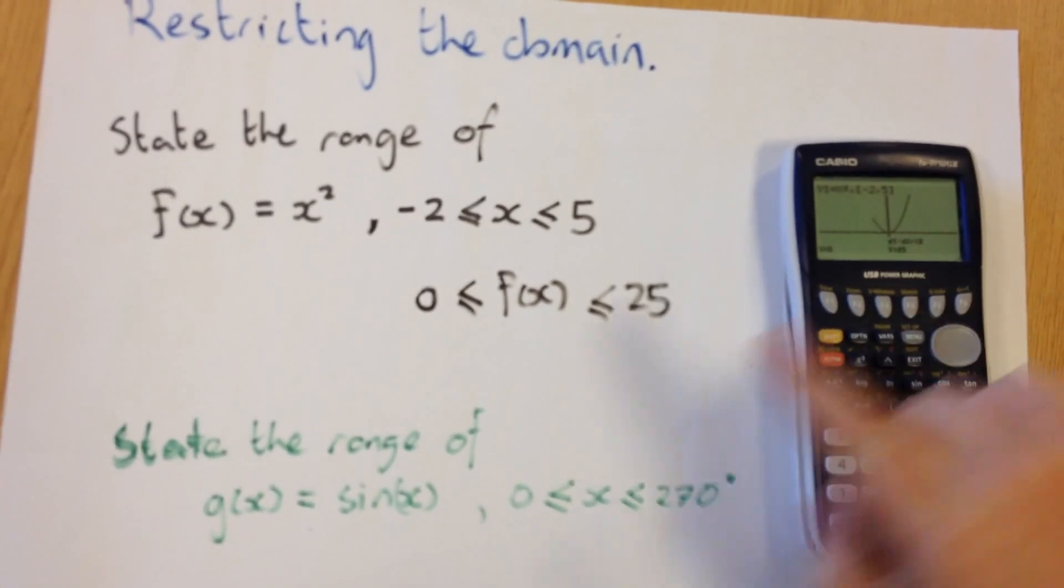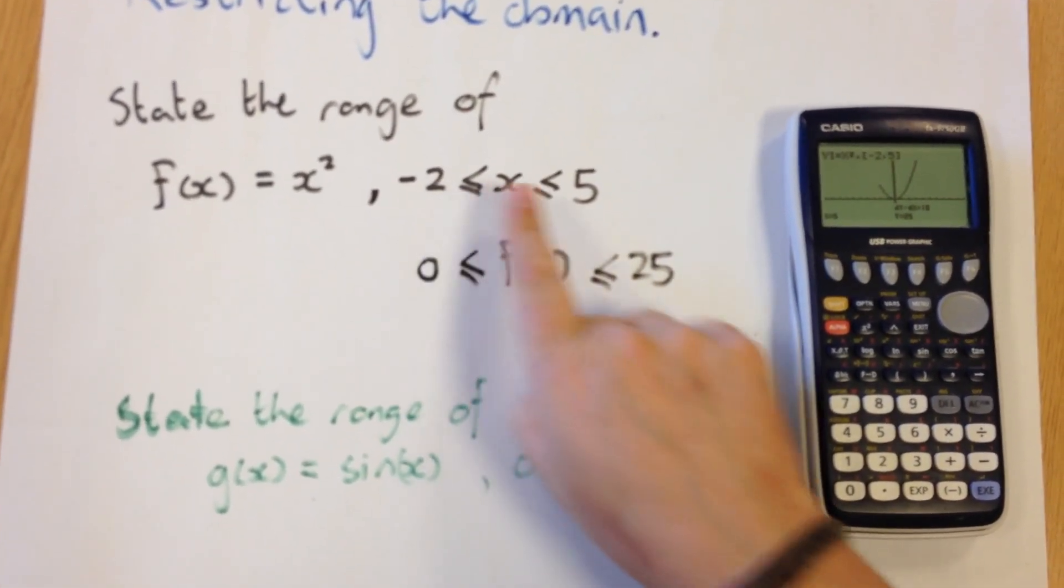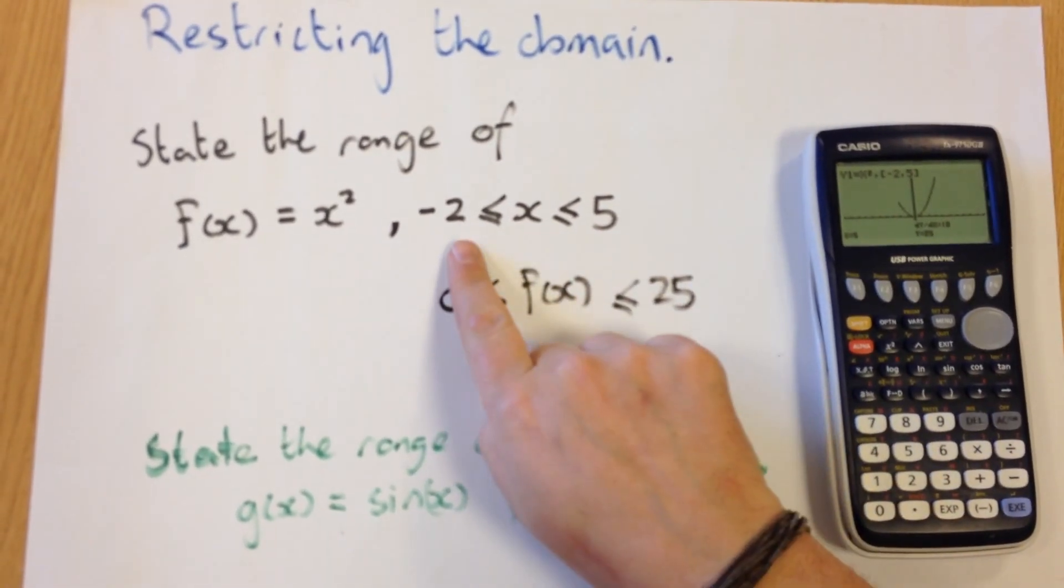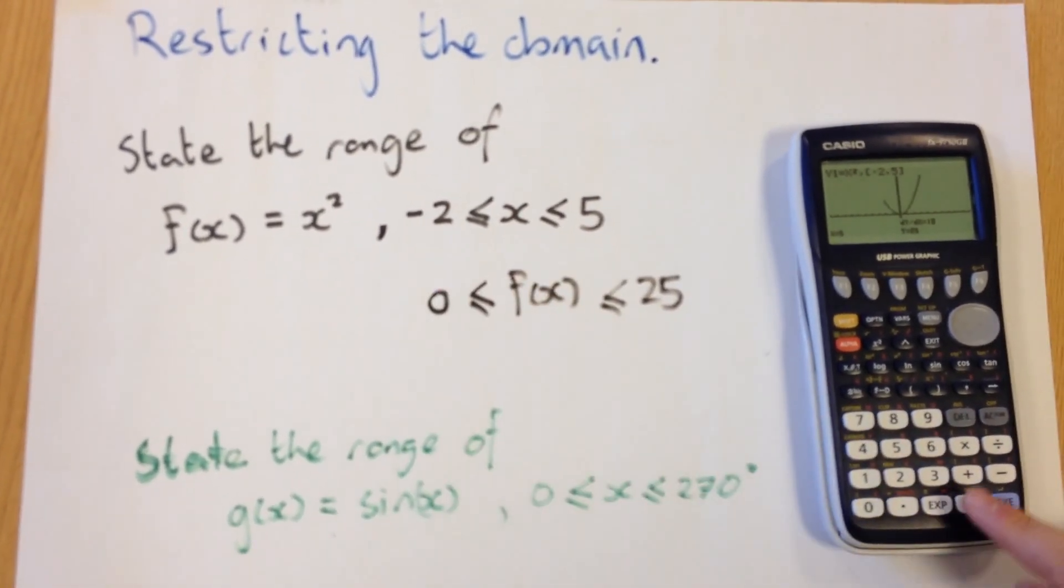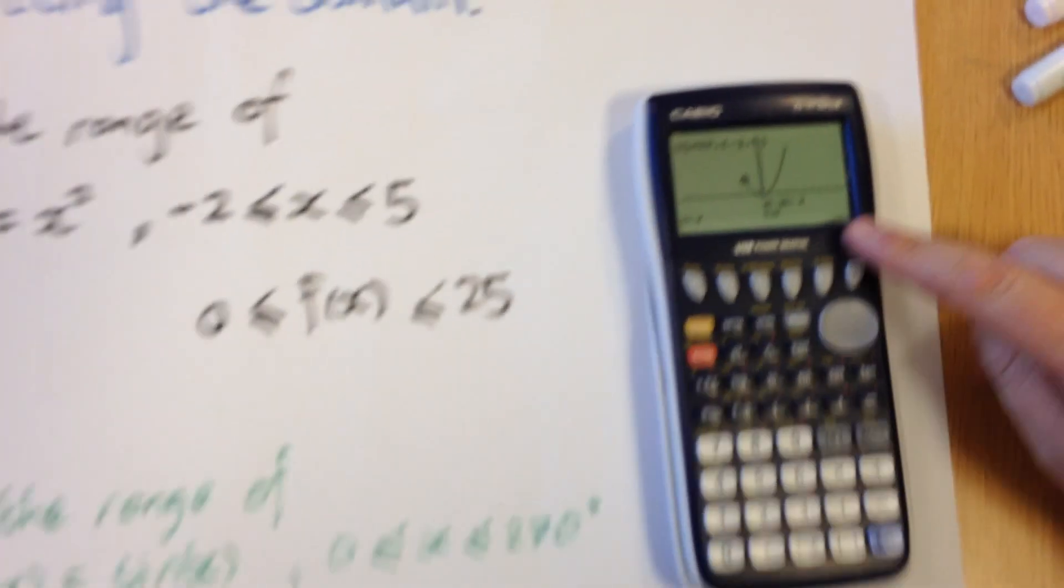Now the common mistake is to just look at the two values on the domain, the lowest value of the domain and the highest value of the domain, and put those in. But if we have a look at, see what the value is when x is minus 2, so I'm on trace mode, minus 2, press that, you can see that y is 4.